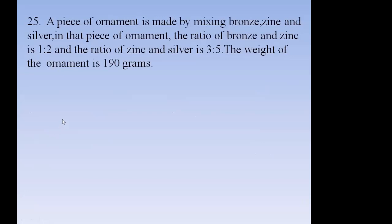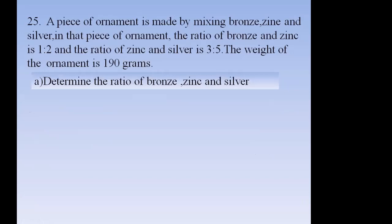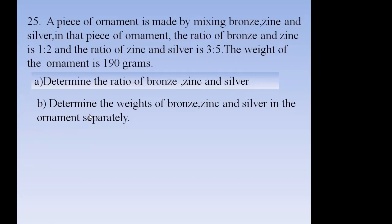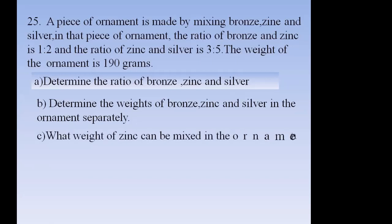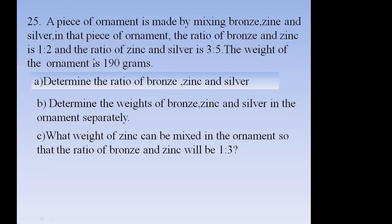Problem 25: A piece of ornament is made by mixing bronze, zinc, and silver. The ratio of bronze to zinc is 1:2 and the ratio of zinc to silver is 3:5. The total weight of the ornament is 190 grams. Part (a): determine the ratio of bronze, zinc, and silver. Part (b): determine the weight of bronze, zinc, and silver separately. Part (c): what weight of zinc can be mixed so that the ratio of bronze to zinc becomes 1:3?